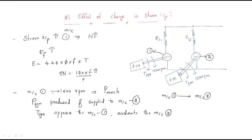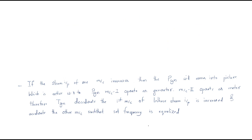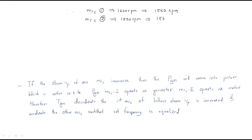Finally, under these conditions both machines will reach the same speed. That common speed may be approximately 1550 rpm. Machine one drops from 1600 rpm toward 1550 rpm, while machine two rises from 1500 rpm toward 1550 rpm, driven by the synchronizing torque and synchronizing power.